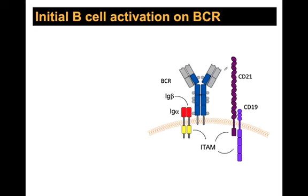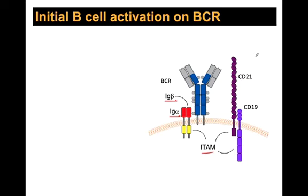Now, the B cell and the FDC presenting antigen are both on the outside of the follicular reticular network and will run into each other. How does the B cell know whether it gets activated? The B cell receptor — a surface version of antibody — doesn't have a signaling protein itself; it must associate with signaling proteins Ig-alpha and Ig-beta, which carry the intracellular tyrosine activation motifs (ITAMs).